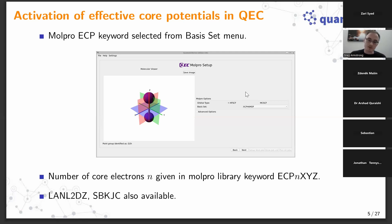The information stored is the Molpro library keyword for the basis set. There is a particular class called the Stuttgart-Cologne basis sets whose Molpro library keyword takes the form ECP, then a number, then some letters. The number is instructive because it tells you how many electrons the core potential will handle. For iodine, the basis set ECP46MDF means 46 electrons per iodine atom are handled by the core potential, leaving seven n=5 valence electrons. This reduces I2 from a 106-electron problem to a 14-electron problem.